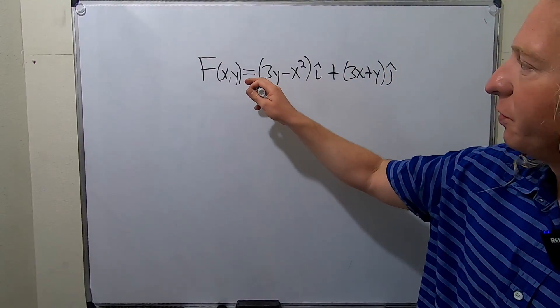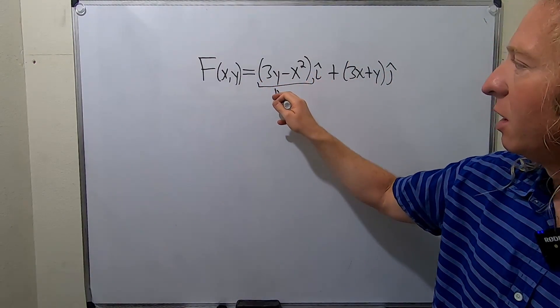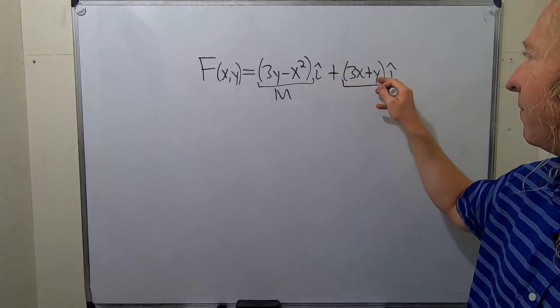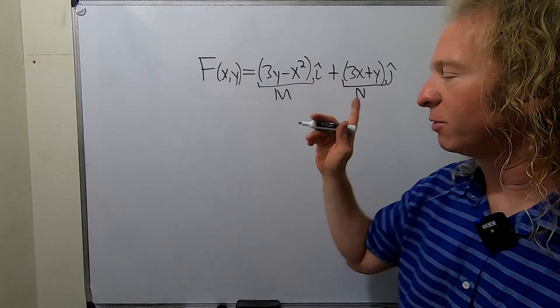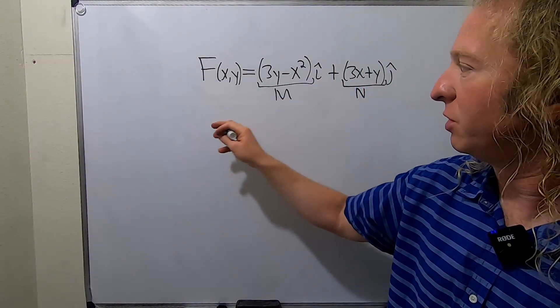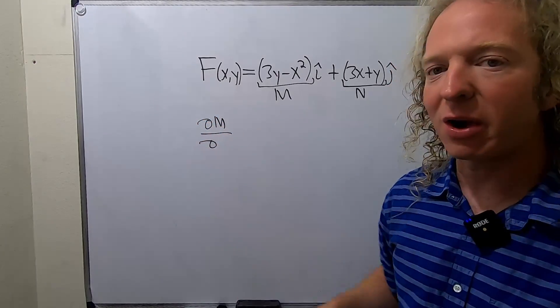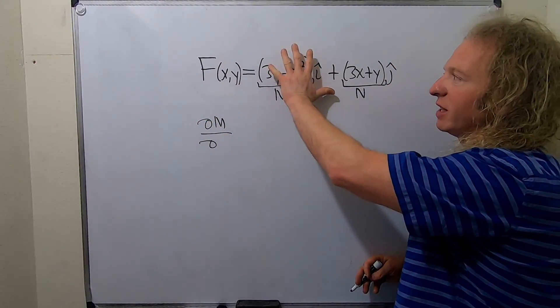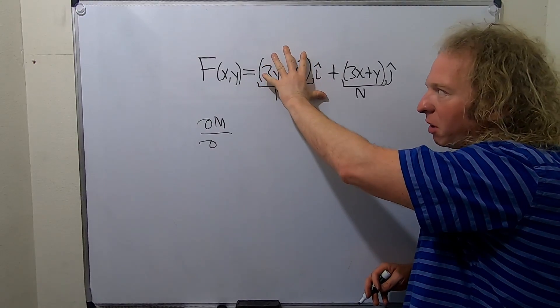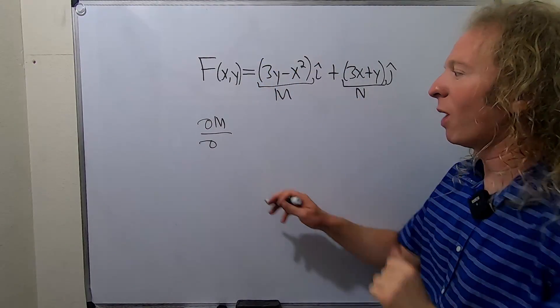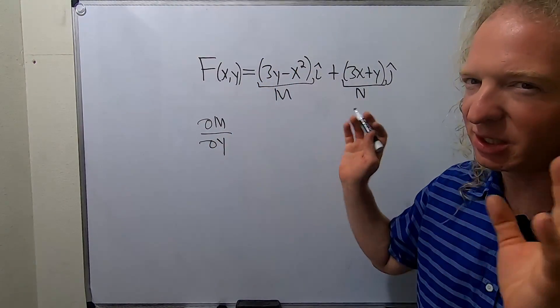First we have to determine if this vector field is conservative. What you do is call this big M and call this big N. Then you compute the following partial derivative. So you compute ∂M/∂... and here's how I memorize it. This is the X component or the first component, so it's ∂Y. It's the other variable, easy way to think about it.